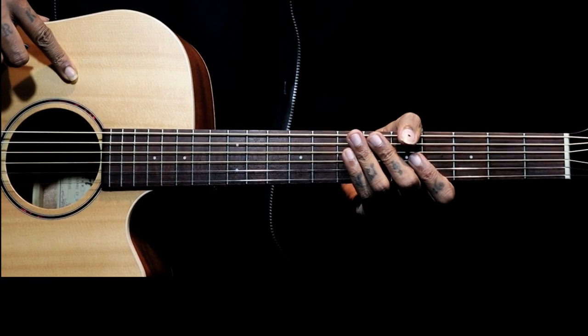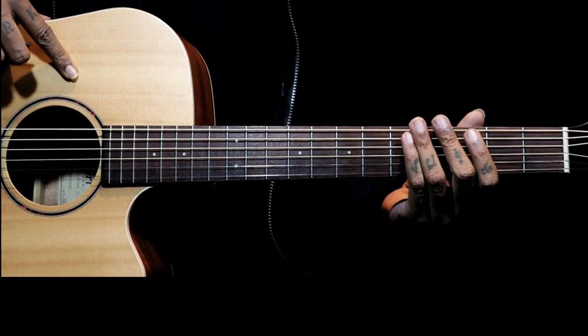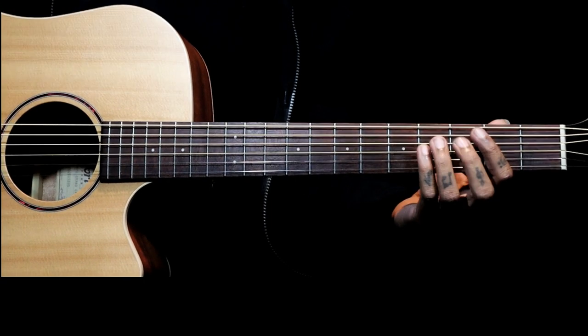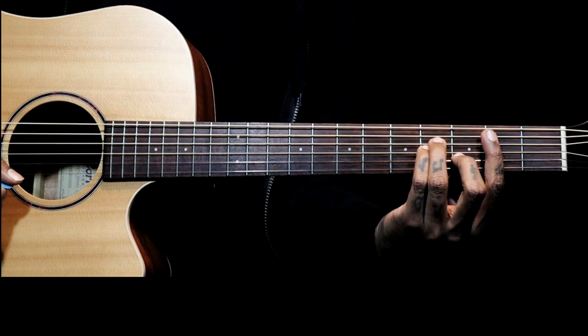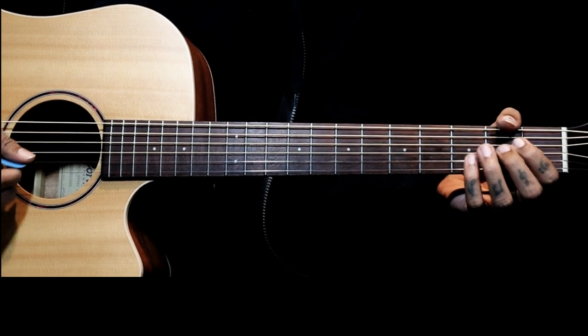Hi all, this progression is from the song Kryptonite by Three Doors Down. To play this progression we have Bm chord, then Bm, G, and Asus2.